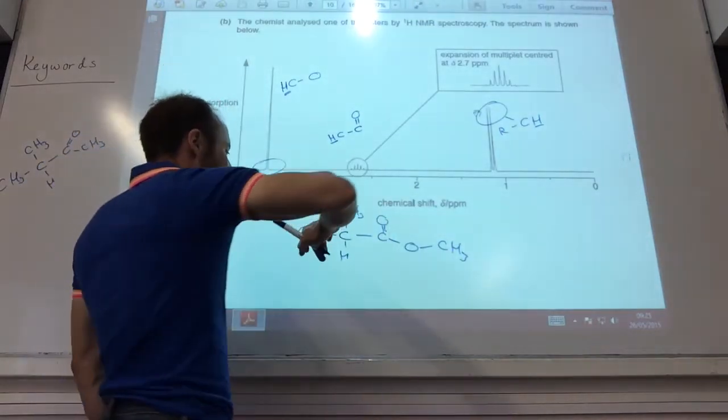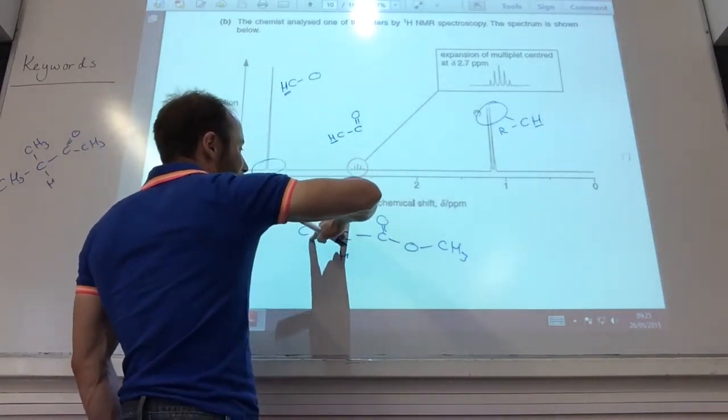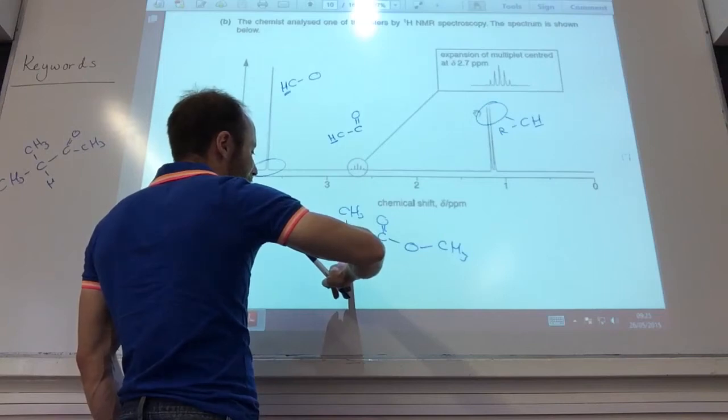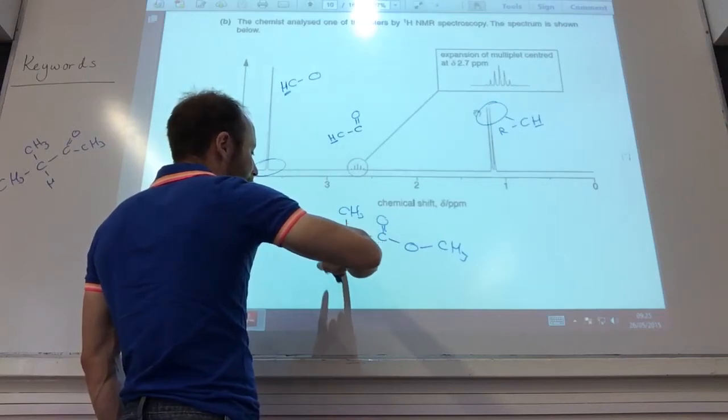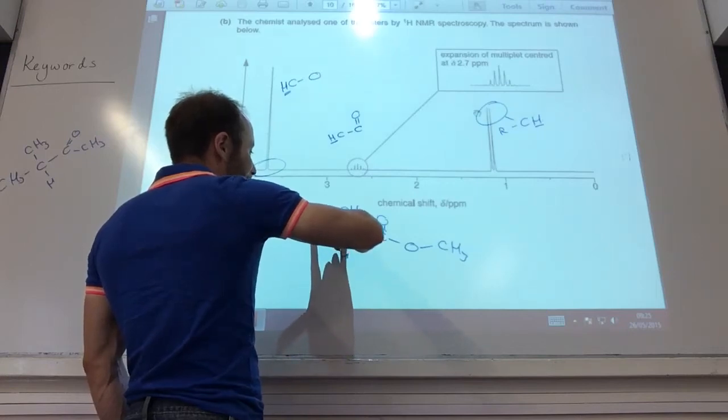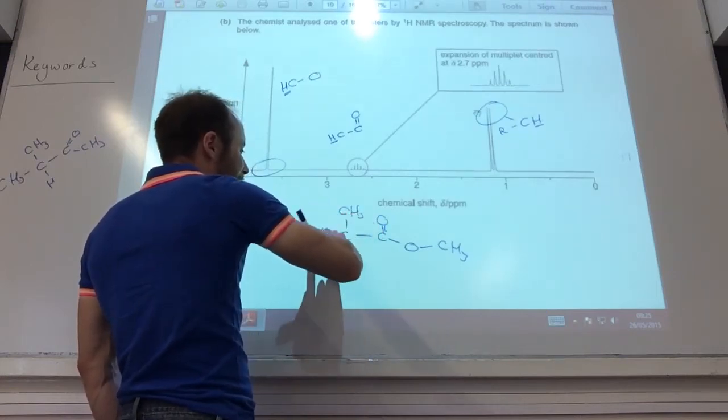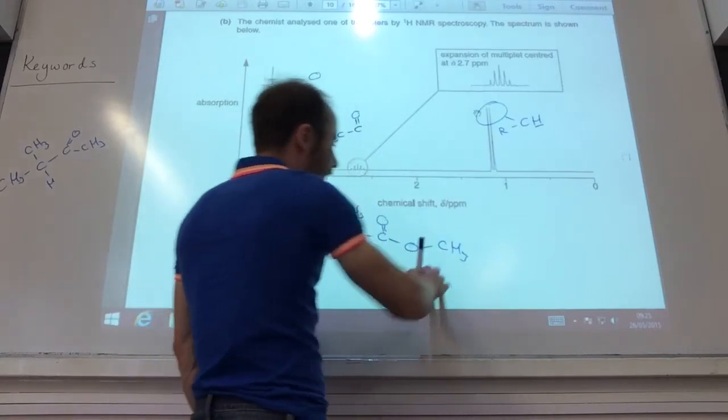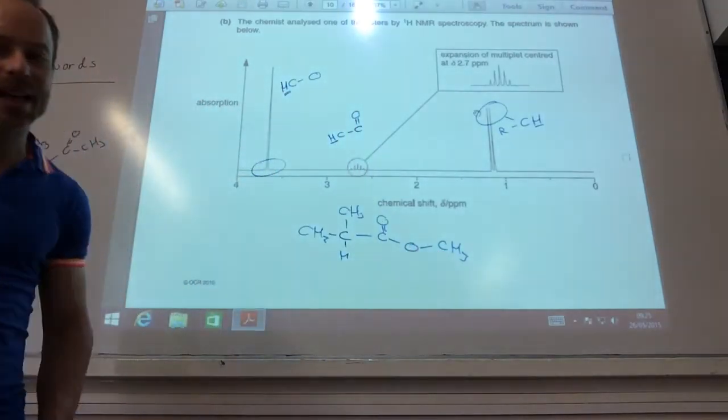So, summary, this peak is split into a doublet because of that one neighboring hydrogen, that peak is split into a seven line pattern multiplet because it's split by six hydrogens, and this is a singlet because he doesn't have any neighbors.